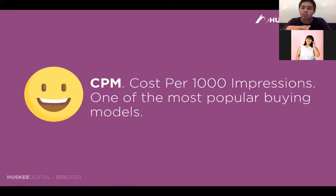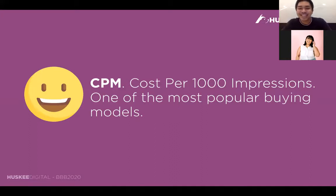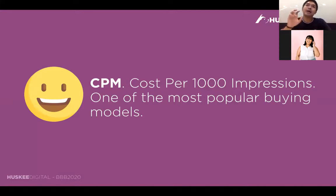The most popular buying model is CPM, or cost per 1,000 impressions. M is the Roman numeral for 1,000. It's the most popular buying model because it most resembled how billboards and TV channels used to sell their advertisement.